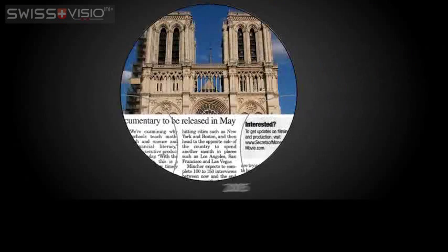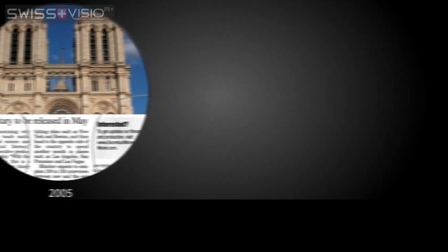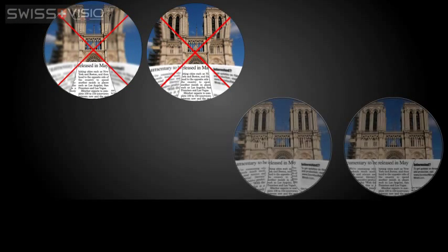In 2005, the first fully personalised free-form progressives were introduced. This top-of-the-line design utilises almost the entire lens and distortion is virtually eliminated.